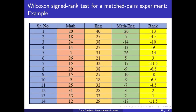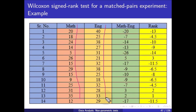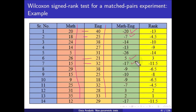There are 14 students in the table. The maths marks and English marks are listed, and the differences are computed: 20 minus 40 is minus 20, 18 minus 25 is minus 7, 26 minus 21 is 5, 15 minus 32 is minus 17, and so on.